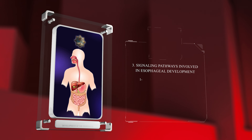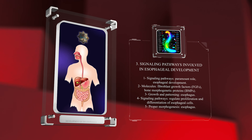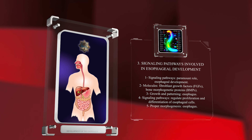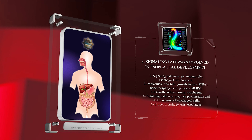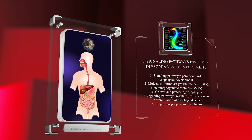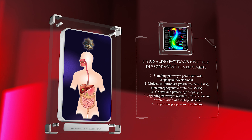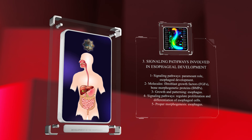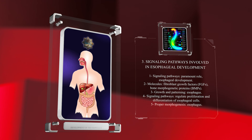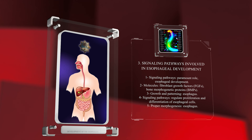Signaling pathways play a paramount role in esophageal development. Various molecules, such as fibroblast growth factors (FGFs) and bone morphogenetic proteins (BMPs), guide the growth and patterning of the esophagus. These signaling pathways regulate the proliferation and differentiation of esophageal cells, ensuring the proper morphogenesis of this organ.